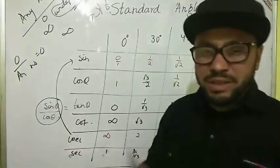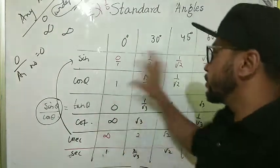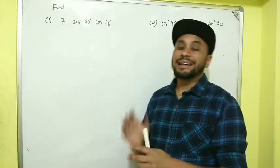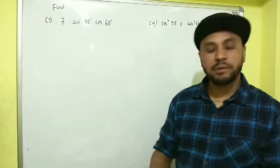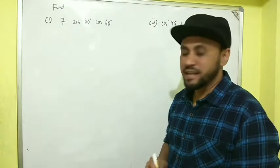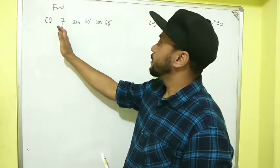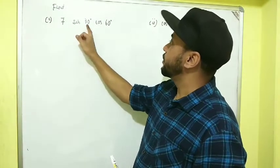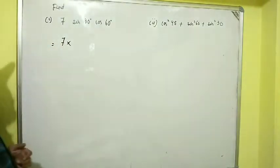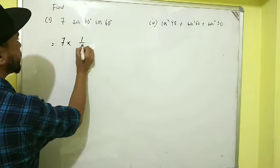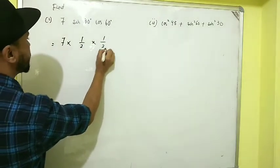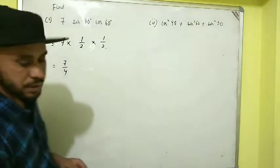Now let's do some examples so you get an idea how to use this table. Please copy the table in your exercise book. The first example: find the value of 7 sin 30° + cos 60°. We just put in the values: sin 30° = 1/2 and cos 60° = 1/2, so this gives 7(1/2) + 1/2 = 7/2 + 1/2.